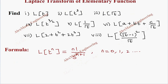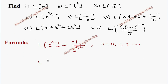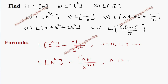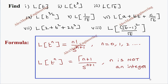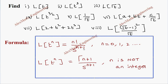When n is not an integer, we use: Laplace transform of t to the power n equals gamma of n plus 1 divided by s to the power n plus 1. So we have two formulas — when n is 0, 1, 2, 3, ... we use n factorial by s to the power n plus 1; when n is not an integer, we use gamma of n plus 1 by s to the power n plus 1.